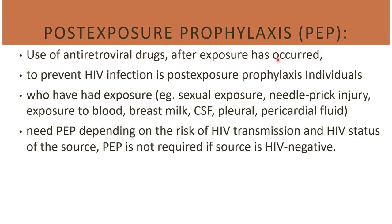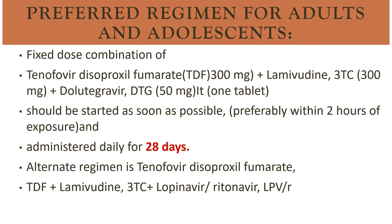For post-exposure prophylaxis — for those already exposed through sexual exposure, needle prick injury, or exposure to blood, breast milk, CSF, pleural fluid, or pericardial fluid — post-exposure prophylaxis must be taken. The preferred regimen for post-exposure prophylaxis in adults and adolescents is the fixed-dose combination of tenofovir 300 mg, lamivudine 300 mg, and dolutegravir 50 mg in a single tablet. It should be started within two hours of exposure and continued for 28 days. The alternate regimen is tenofovir, lamivudine, and lopinavir or ritonavir.